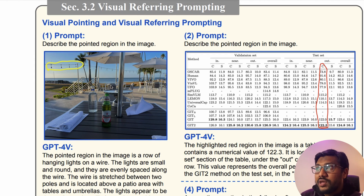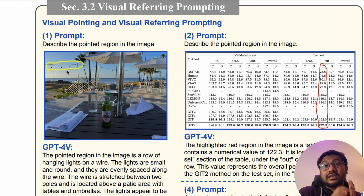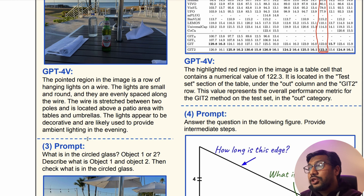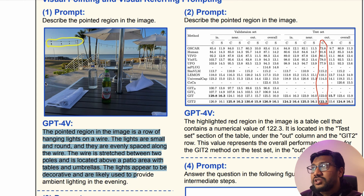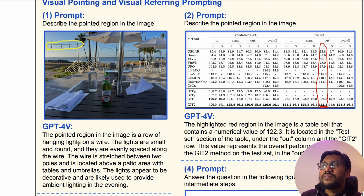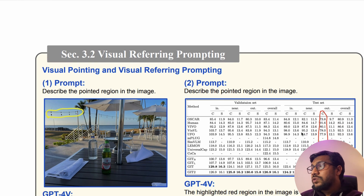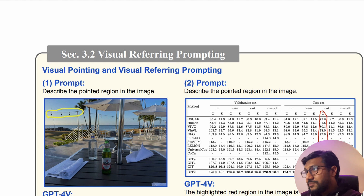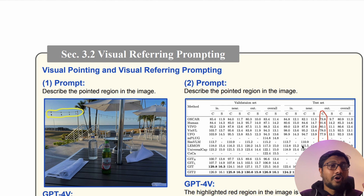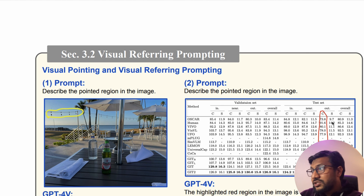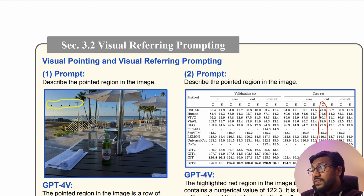You can upload an image and say 'describe the pointed region in the image.' GPT-4 vision understands what the pointed region is and starts explaining what is in the highlighted region. It says the pointed region is a row of hanging lights on a wire. You can also upload a table and say 'describe the pointed region' — a very simple prompt. Just because you're pointing at it, it understands that is what you're interested in. The highlighted red region is a table cell containing a numerical value.